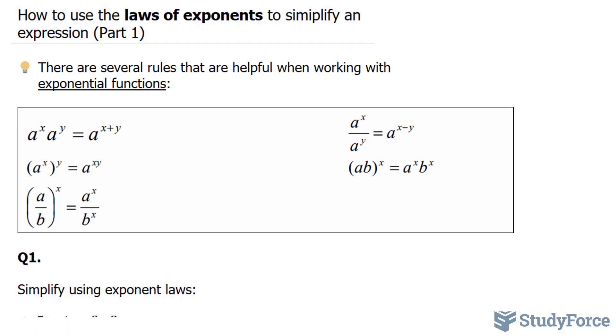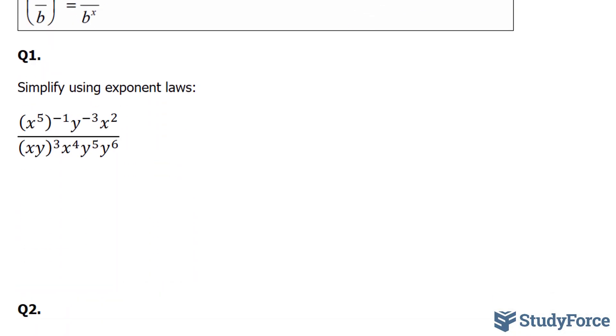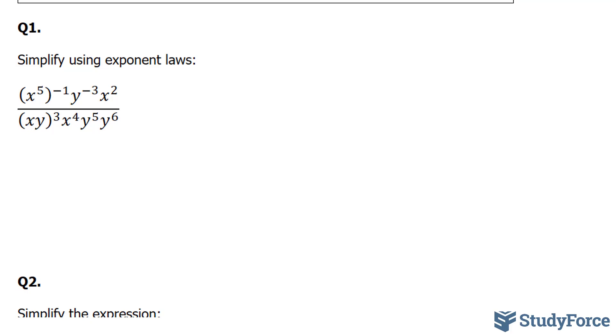Let's start with question number one. Question number one asks, simplify using exponent laws. You'll notice that there are two variables being used here, both x and y. So we'll start off by distributing this negative 1 to the x, and this 3 to both the x and the y.